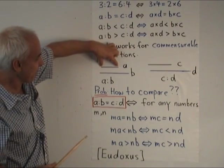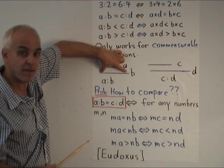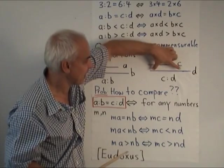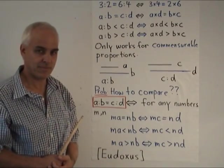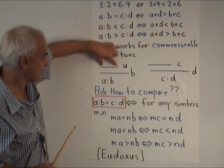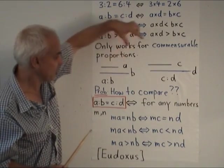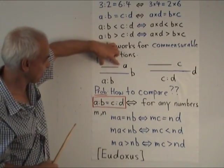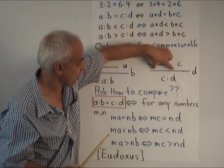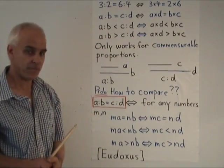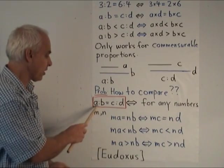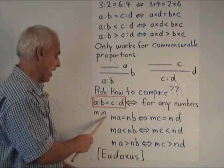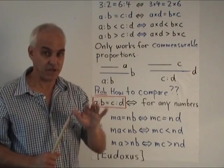So in other words, if 3 times this one equals 2 times this one, and these proportions are the same, then it should be the case that 3 times this equals 2 times this. On the other hand, if 3 times this is less than 2 times this, then it should be the case that 3 times this is less than 2 times this. And if 3 times this is bigger than 2 times this, then 3 times this should be also bigger than 2 times this. So we need all of these conditions satisfied to conclude that A to B is equal to C to D.